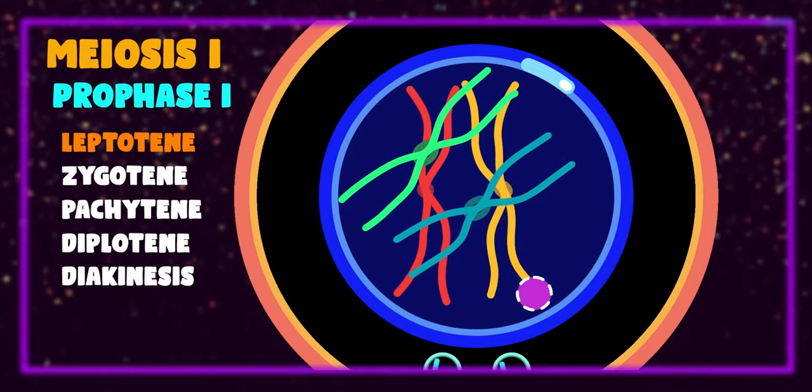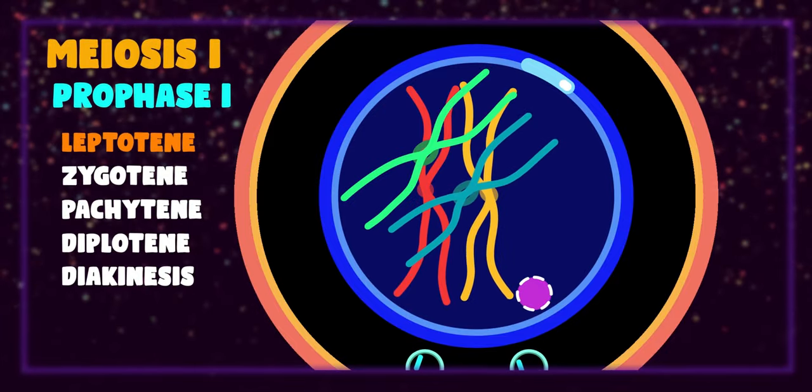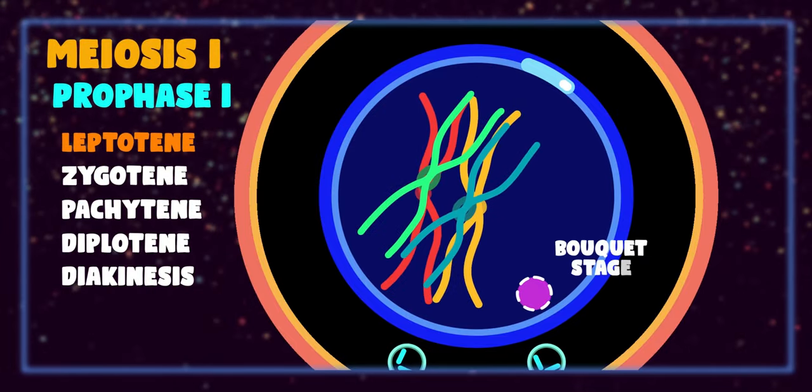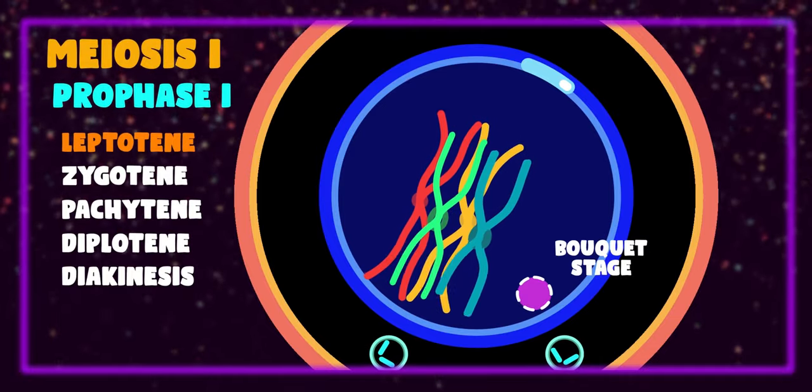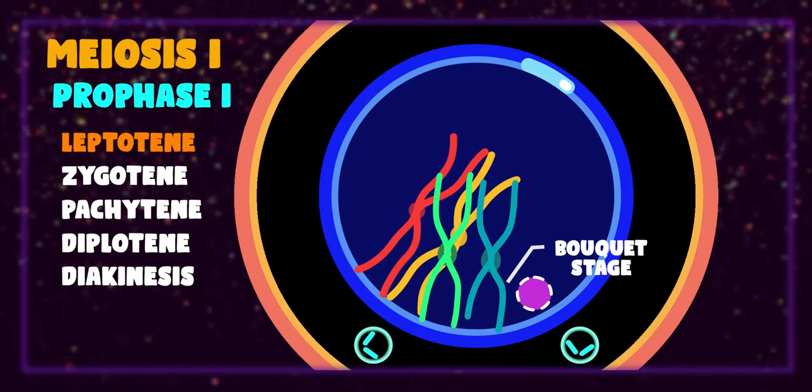During leptotene, chromosomes are attached to nuclear lamina in the form of a bundle which appears like a bouquet of flower, hence it is also called bouquet stage.